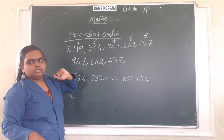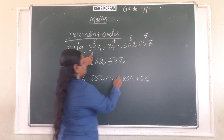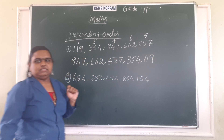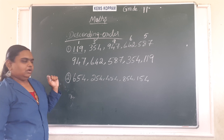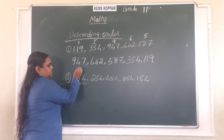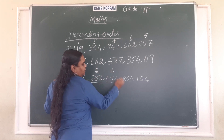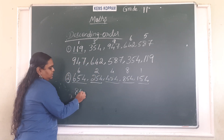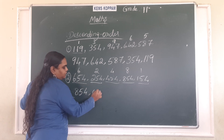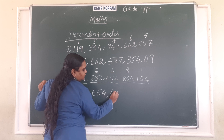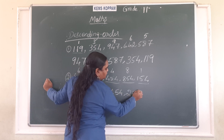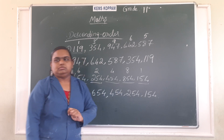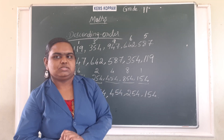Second set: six hundred and fifty-four, two hundred and fifty-four, four hundred and fifty-four, eight hundred and fifty-four, one hundred and fifty-four. First digits: three, two, four, eight, one. The biggest is eight, so eight hundred and fifty-four is first, then six hundred and fifty-four, then four hundred and fifty-four, then two hundred and fifty-four, then one hundred and fifty-four. We have arranged the numbers from biggest to smallest.